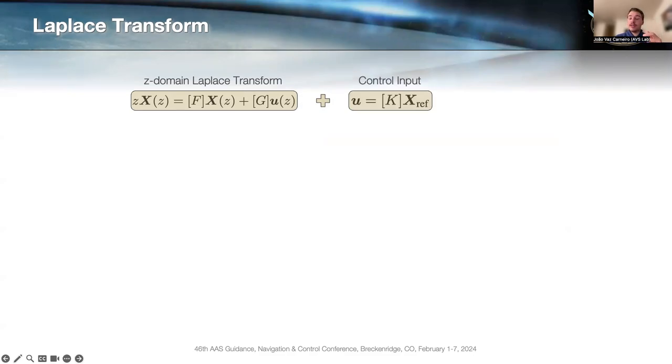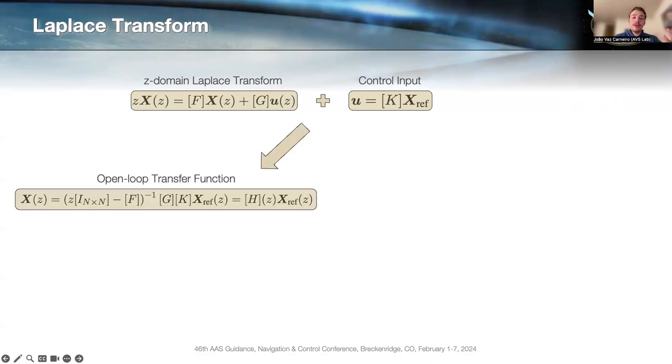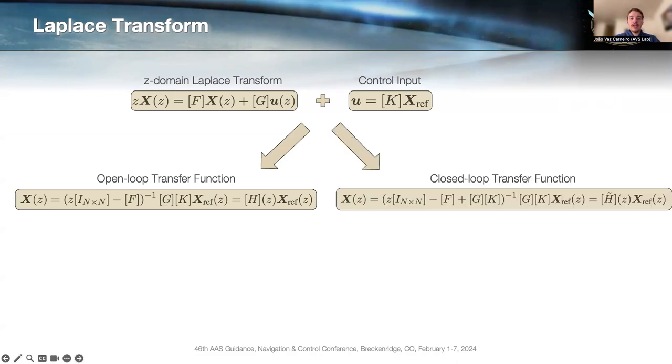Further, if we assume that the control input consists of a gain matrix times a reference state, this is a very common assumption, we can actually find the equations for the open loop and the closed loop system. The open loop system is shown here, and h is the open loop transfer function. On this side, we have the closed loop system with the closed loop transfer function h tilde.